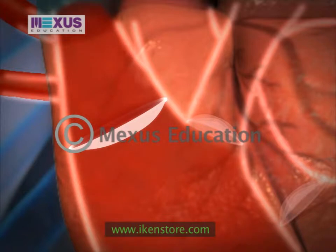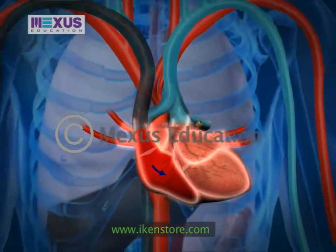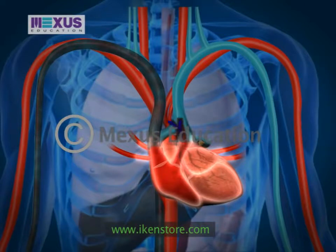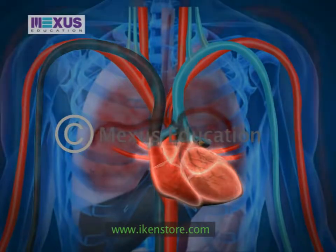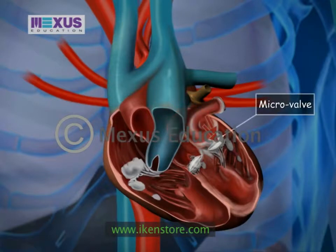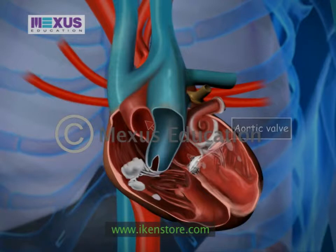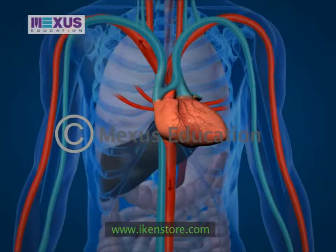From the right ventricle, blood flows through another valve and then to the lungs, where it picks up oxygen. From the lungs, it flows back into the left atrium of the heart and through the mitral valve into the left ventricle.